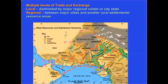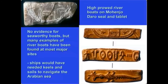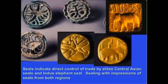There are multiple levels of exchange: local exchange around cities, exchange between cities, exchange between the Indus region and outside regions, and long-distance exchange as far as Mesopotamia. We have boats on the rivers and carts overland. There are indicators of people coming from outside areas to the Indus — seals from Central Asia were found pressed into clay at Mohenjo-daro alongside Indus sealings. However, we do not have any evidence of Mesopotamian traders coming to the Indus.